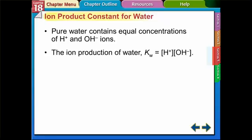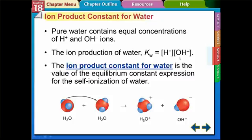Pure water contains equal concentrations of hydrogen and hydroxide ions. The ion product constant for water, symbol Kw, equals the concentration of both those ions multiplied together, because water breaks up into these two ions. The Kw is the value of the equilibrium expression for the self-ionization of water — some water molecules break up into H+ and OH-. Remember, hydronium is the same as H+.